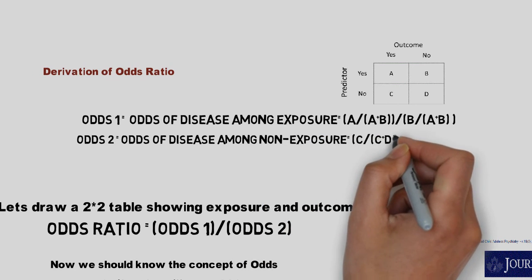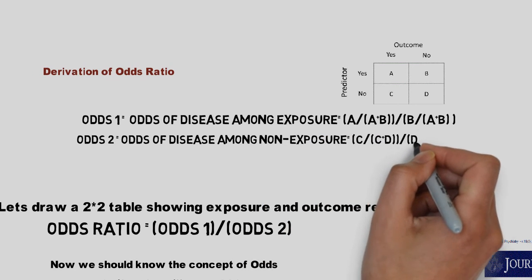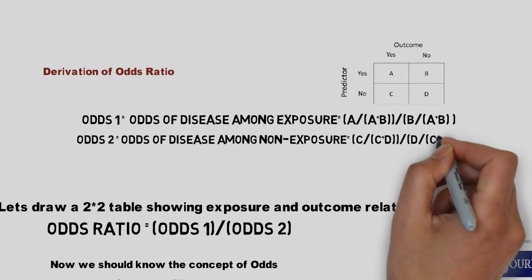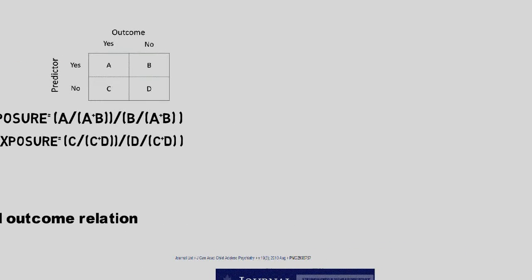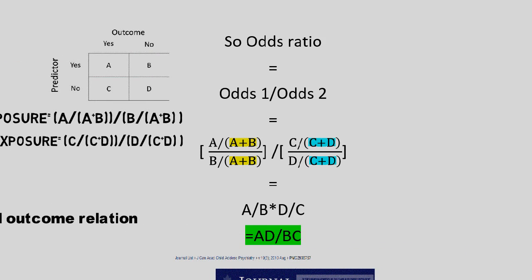The odds ratio is the ratio of those two odds. You can see that (A+B) and (A+B) cancel, and (C+D) and (C+D) cancel, and then we get the final result: AD divided by BC. Thank you very much.